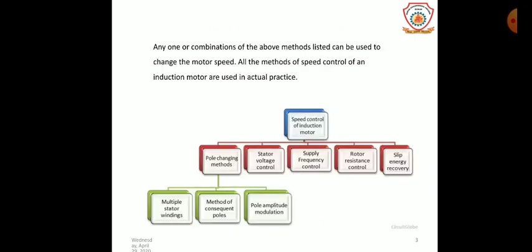There are five types of speed control methods: first is pole changing method, second is stator voltage control method, third is supply frequency control method, fourth is rotor resistance control method, and fifth is slip energy recovery method. The pole changing method is subdivided into three categories: multiple stator windings, method of consequent poles, and pole amplitude modulation.